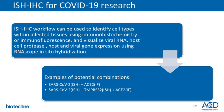In addition to using RNA Scope probes to detect COVID-19, you can now also combine RNA Scope probes with commercially available antibodies. Examples of potential combinations include the SARS-CoV-2 ISH probe combined with the ACE2 receptor antibody.